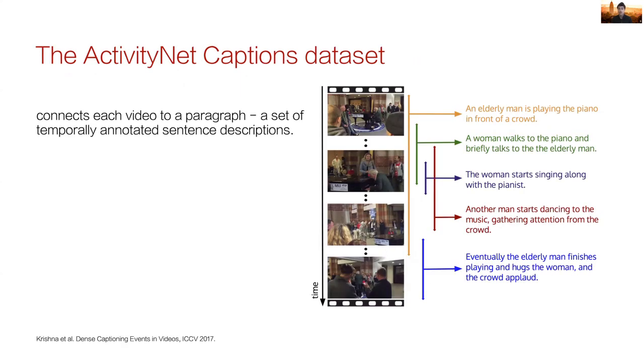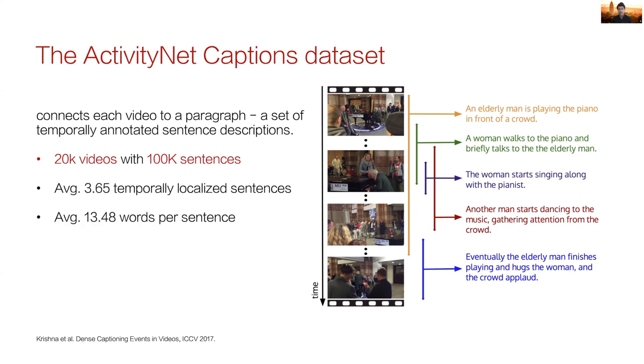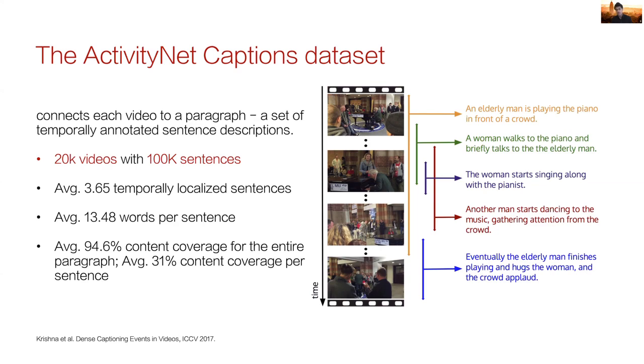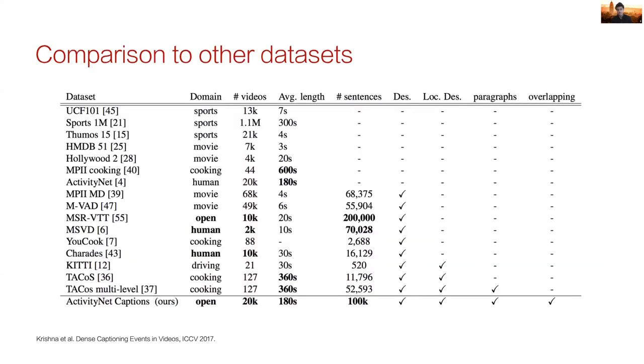To train models to accomplish this task, we introduced the ActivityNet Captions dataset consisting of 20,000 videos with over a hundred thousand sentences. Each of the sentences were temporally localized with an average of 3.6 sentences per video and 13 words per sentence. We designed our annotation tasks to encourage consistent segmentations and found that our events encompassed about 94% of the videos. At the time of our release, our dataset was the only video dataset with temporally localized overlapping events.